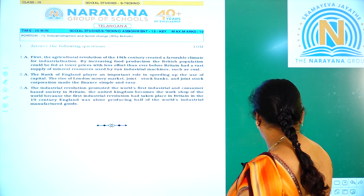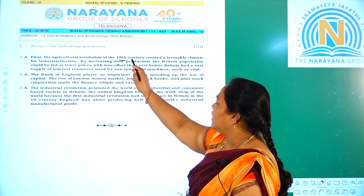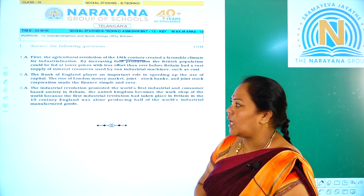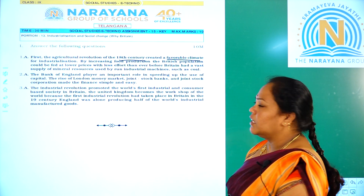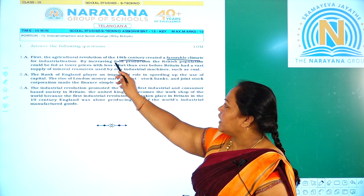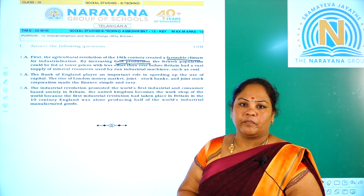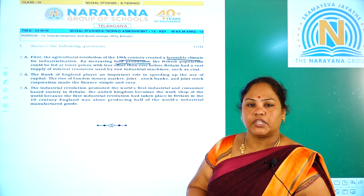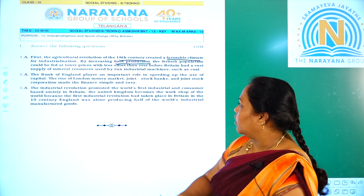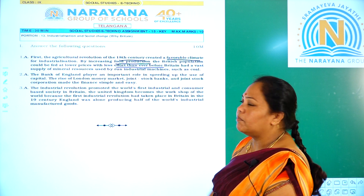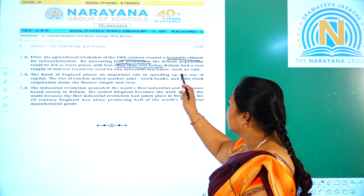Let us see the answer for this. First, the agricultural revolution which took place during the 18th century created favorable conditions for industrialization. By increasing food production, the British population could be fed at lower prices. The cost of food production decreased in Britain so that people could purchase commodities at lower prices with less effort than ever before.